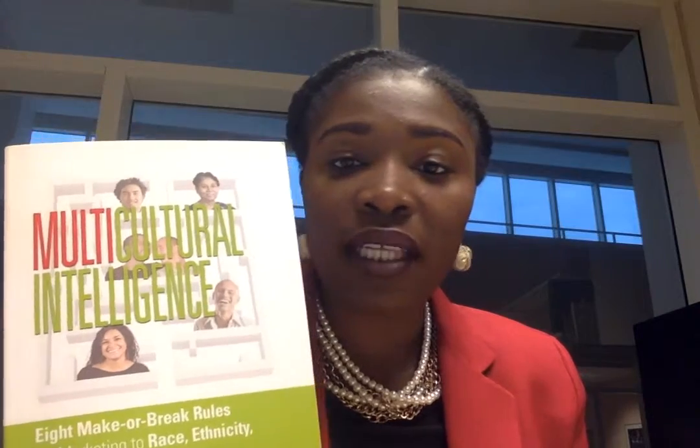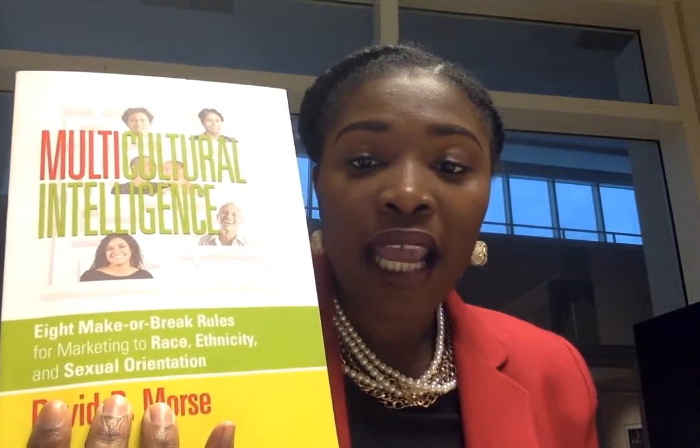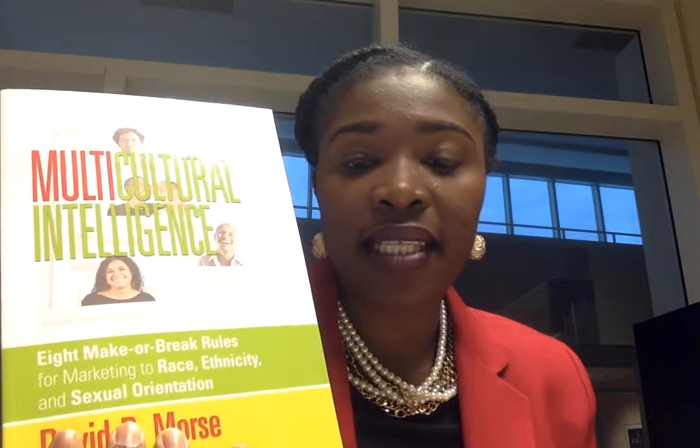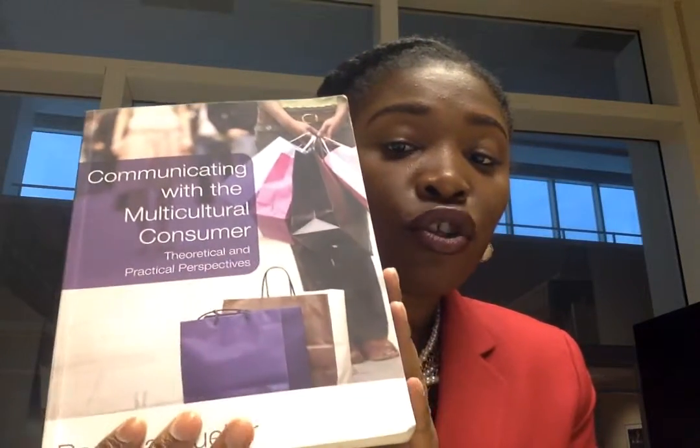First and foremost, I just want to introduce you guys to the texts for the course. One is going to be Multicultural Intelligence by David Moritz: 8 Make or Break It Rules for Marketing to Race, Ethnicity, and Sexual Orientation. We also have Communicating with the Multicultural Consumer by Barbara Marueller. Both books are going to be necessary for your success in the course, so if you haven't gotten those books yet, please go ahead and get hold of them. You will need them by week three at least.